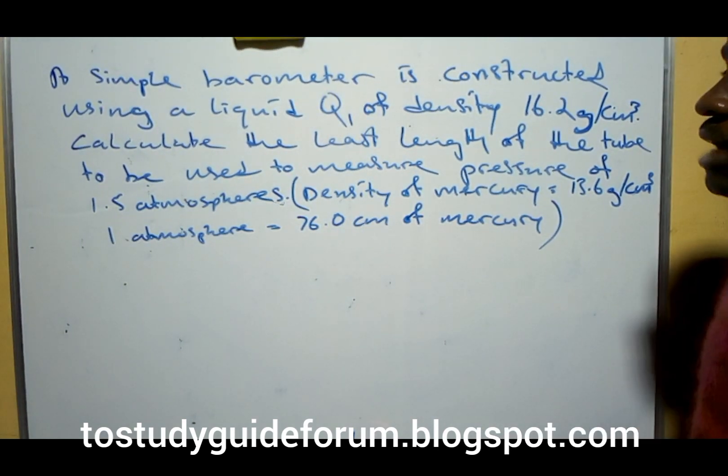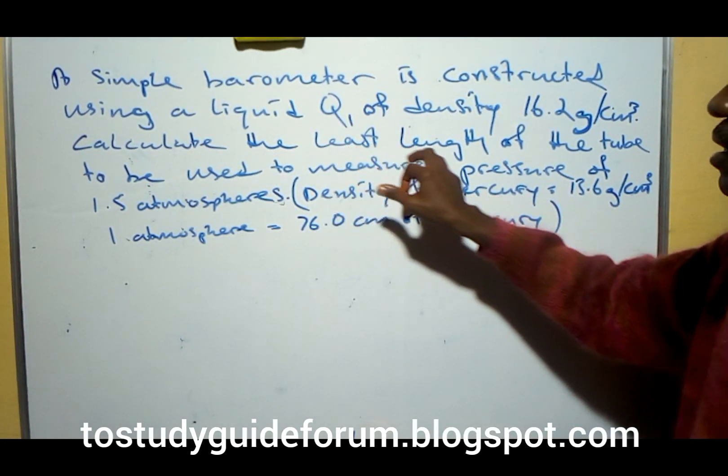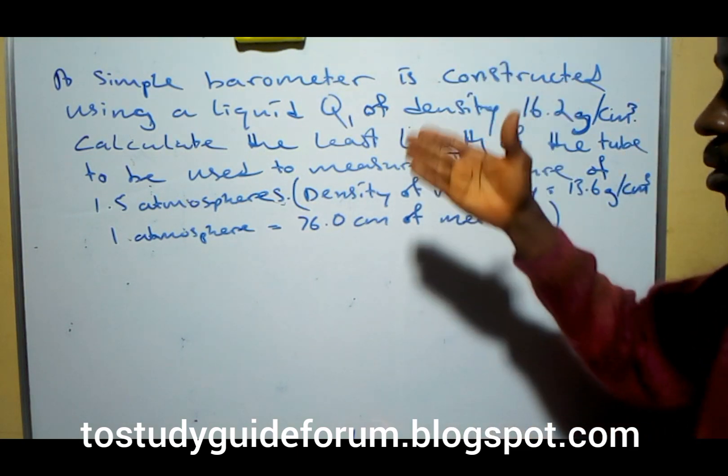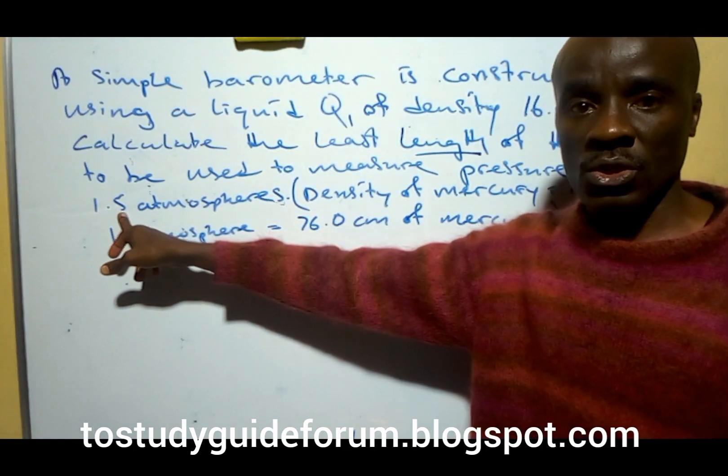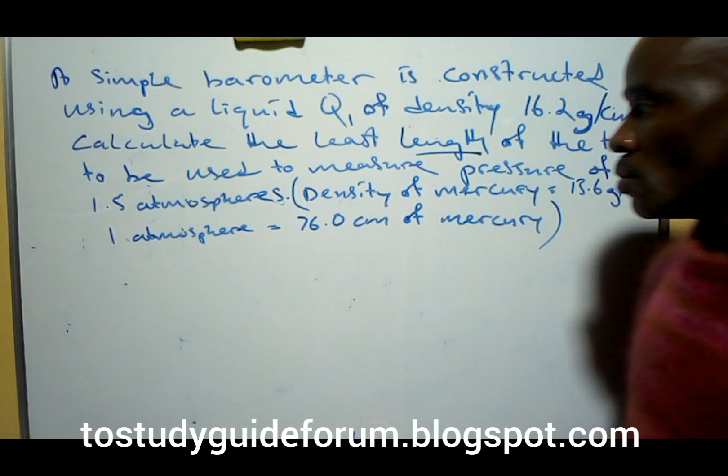So to solve this problem, note what we are asked to calculate. We are asked to calculate the length. This is the length that we are going to calculate, the length of the tube that will give us the actual measurement, this pressure that we are looking at, the 1.5.